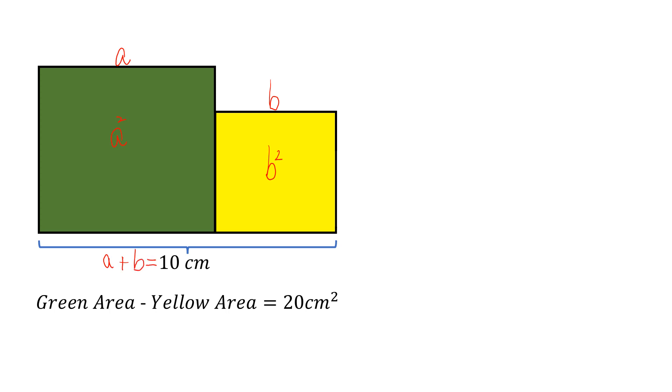We know A plus B equals 10 cm, and the difference between the areas, A² minus B², equals 20. We need to find A² and B².